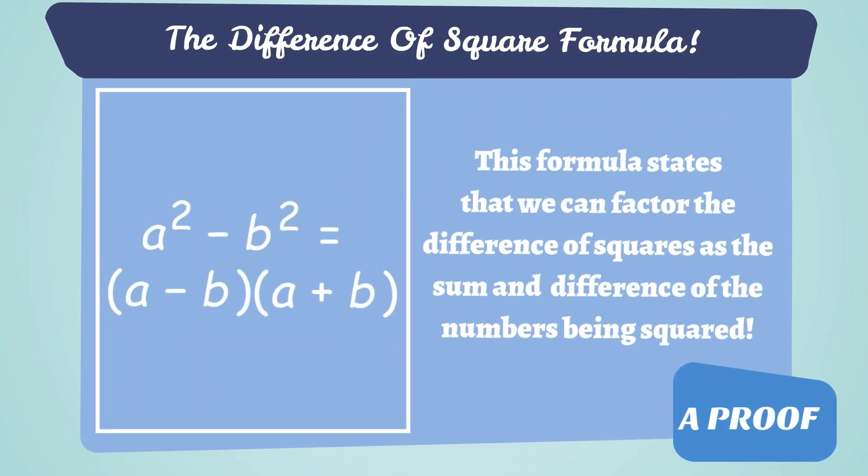To solve this problem, it's best that we know the difference of squares formula, which states that a squared minus b squared equals a minus b times a plus b. This formula basically states that we can factor the difference of two squares as a sum and difference of the numbers being squared.